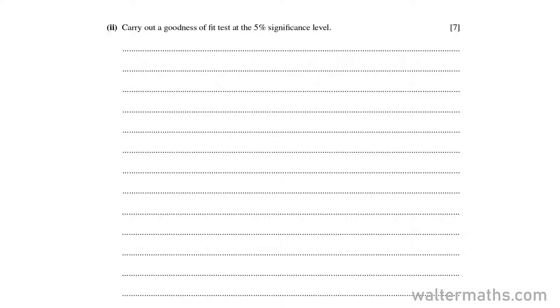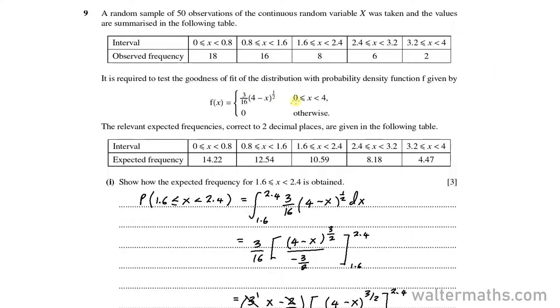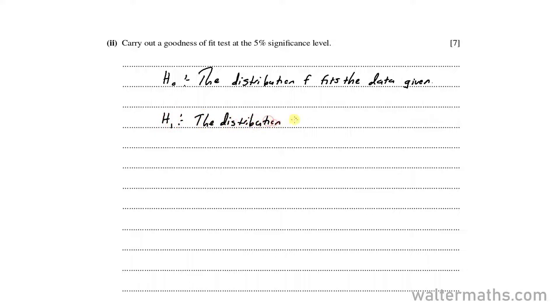On part 2, carry out a goodness of fit test at the 5% significance level. A goodness of fit test is used to see if the distribution F fits the data given. The null hypothesis H0 is that the distribution F fits the data given, and the alternative hypothesis is that the distribution F does not fit the data given.